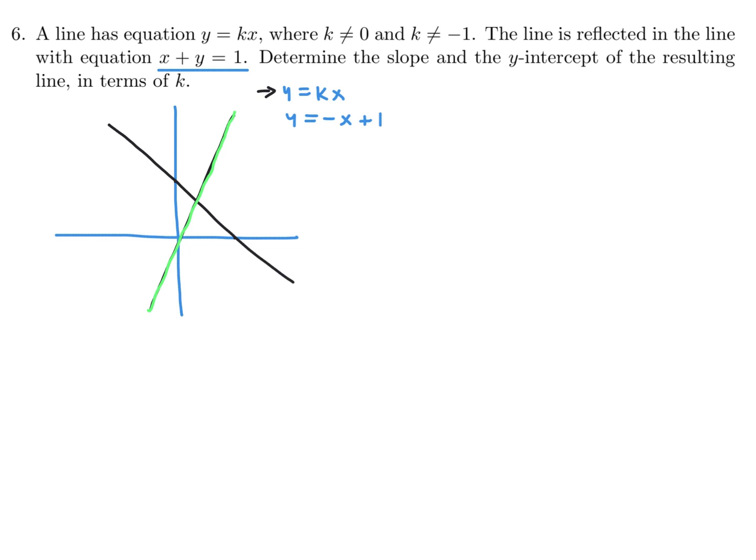Before getting into abstract k's, let me do it with numbers first to illustrate the concept. If a line is reflected in another line, a point and its reflection are equidistant from the mirror line. So if I pick a point and draw a perpendicular to the mirror line, the reflected point is the same distance on the other side.